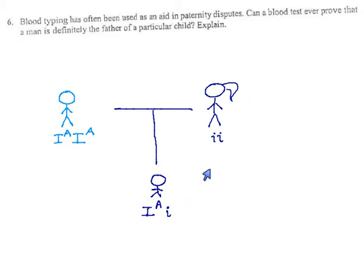So, something that could happen is that a mother with a certain blood type has a child with a certain blood type and says, this child has a little i, which clearly came from me, and a little A, or an I^A, which must have come from its father, and you have I^As, therefore you are the father.